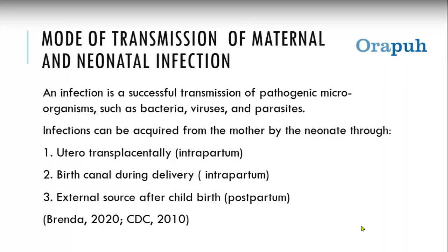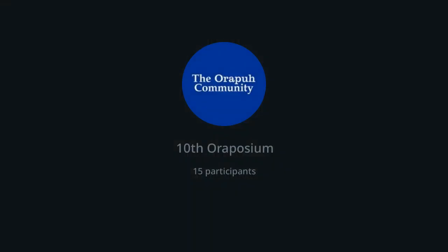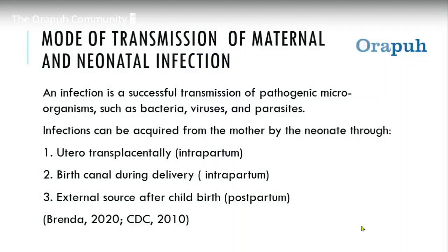Infection is a successful transmission of pathogens — that is, when a pathogen is able to invade the body by overpowering the white blood cells. When a microorganism is able to subdue those defence cells, infection has invaded the body. The things that cause infection include bacteria, viruses, and parasites.